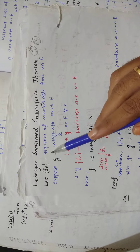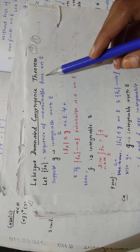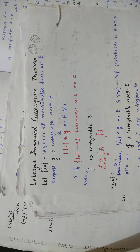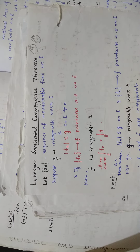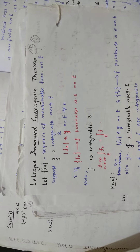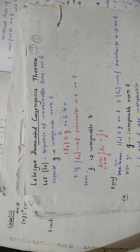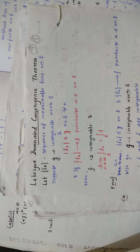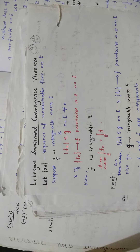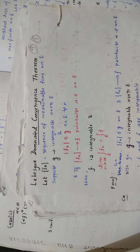Let Fn be a sequence of measurable functions on E. That means there are measurable functions F1, F2, F3, F4, F5, up to Fn — a sequence of measurable functions on E. E means some measurable set, and within this measurable set you have these measurable functions.